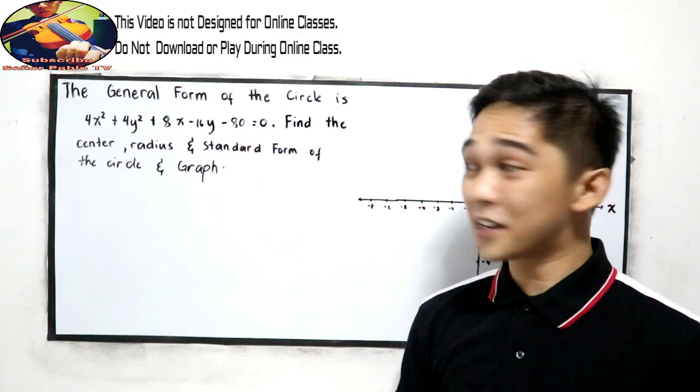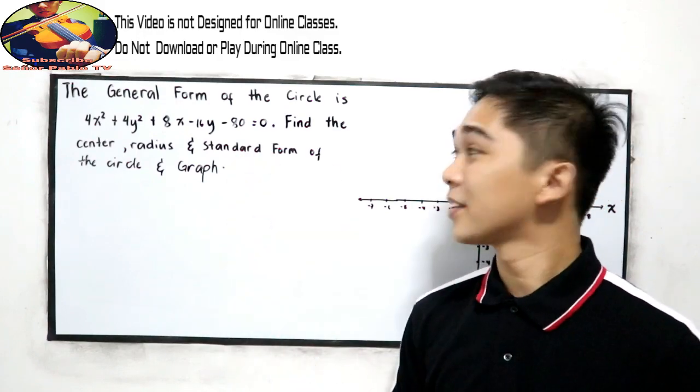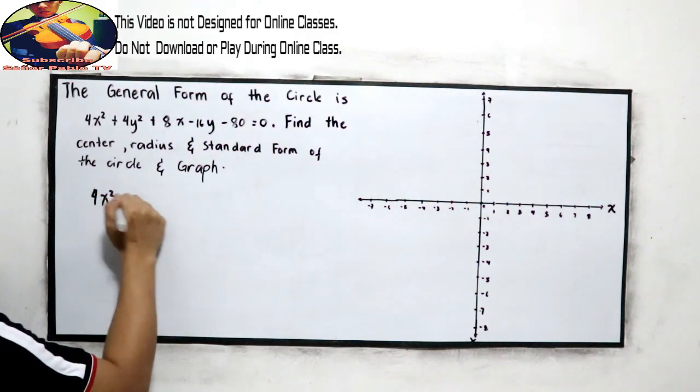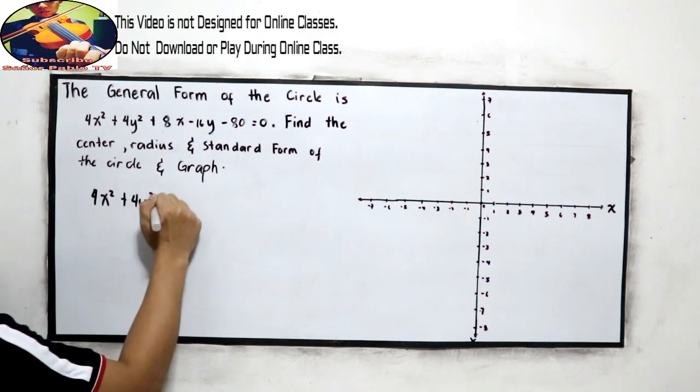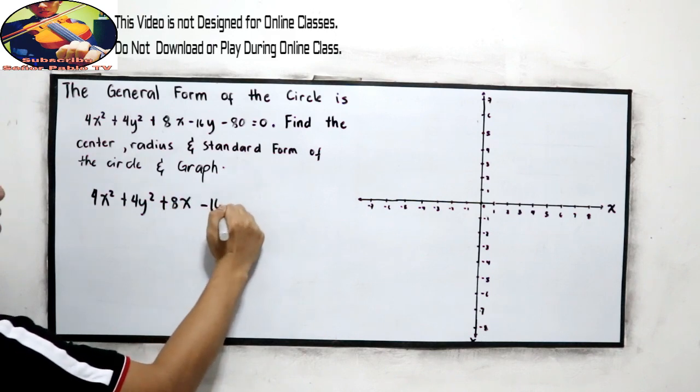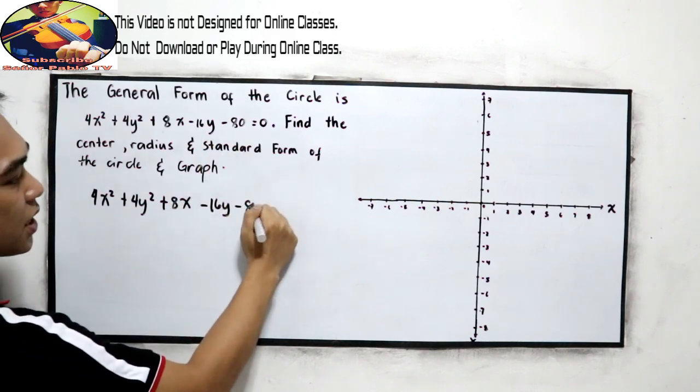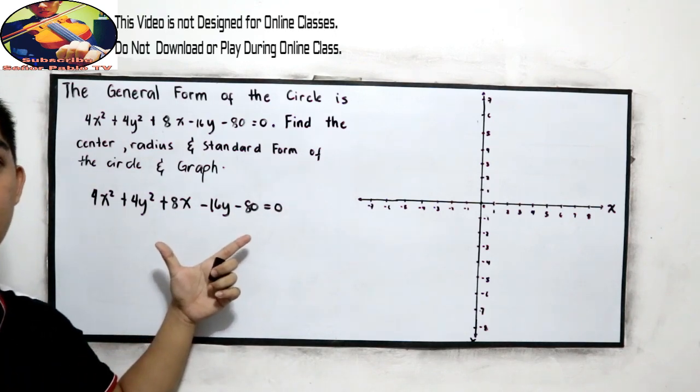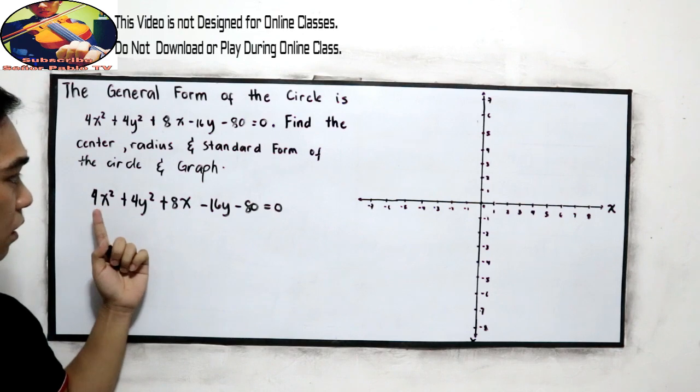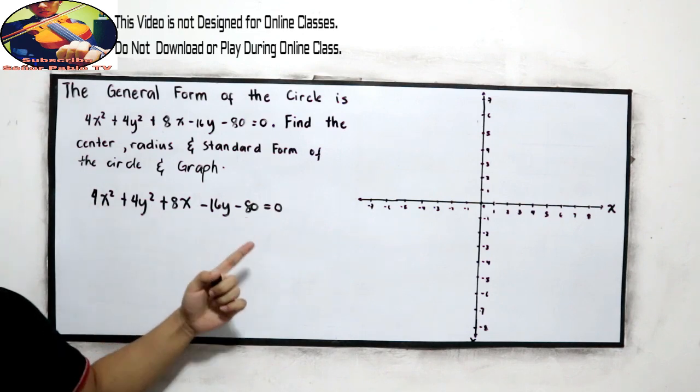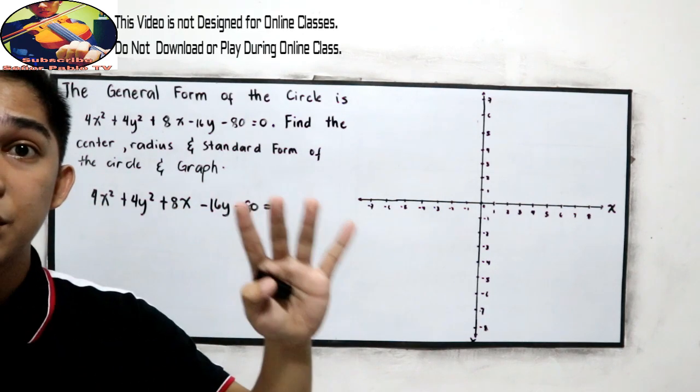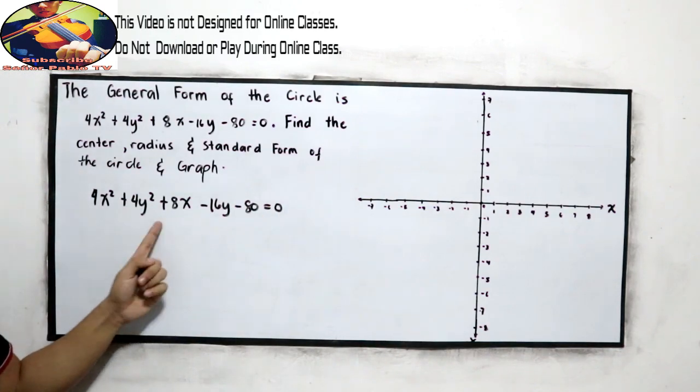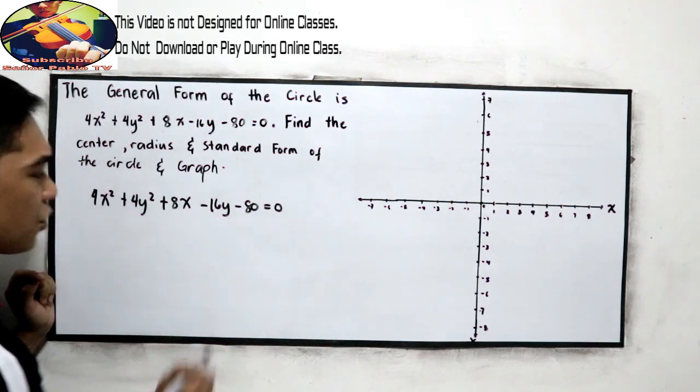Let us find first our standard form. So, copy the given. The given is 4x squared plus 4y squared plus 8x minus 16y minus 80 equals 0. Analyze our given. The equation is divisible by 4, so we can reduce our given equation. Divide by 4.